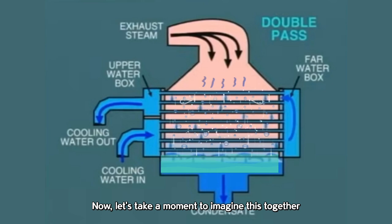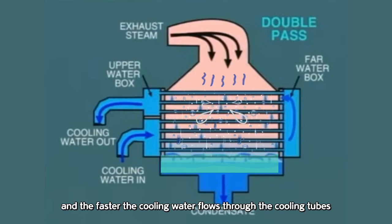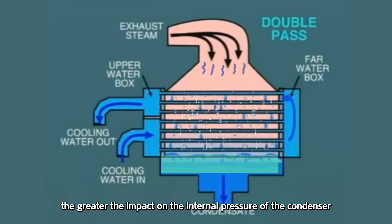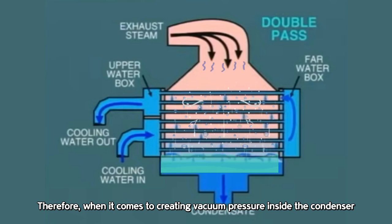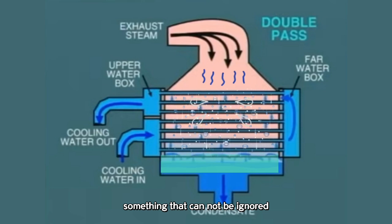Now let's take a moment to imagine this together. The lower the cooling water temperature, and the faster the cooling water flows through the cooling tubes, the greater the impact on the internal pressure of the condenser. Therefore, when it comes to creating vacuum pressure inside the condenser, the temperature of the cooling water is something that cannot be ignored.